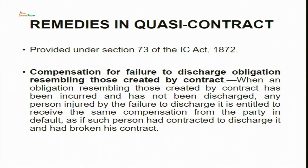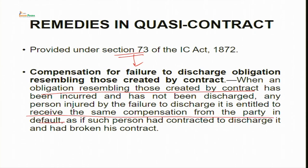The remedy in quasi-contract: section 73, like it provides damages in case of breach of contract, provides a similar remedy in case of quasi-contract also. It says: when an obligation resembling those created by contract has been incurred and has not been discharged, any person injured by the failure to discharge it is entitled to receive the same compensation from the party in default as if such person had contracted to discharge it and had broken his contract. That means if you are not reimbursing, not repaying, not returning, then the affected party has the right to approach the court and claim compensation rightfully. Thank you friends.